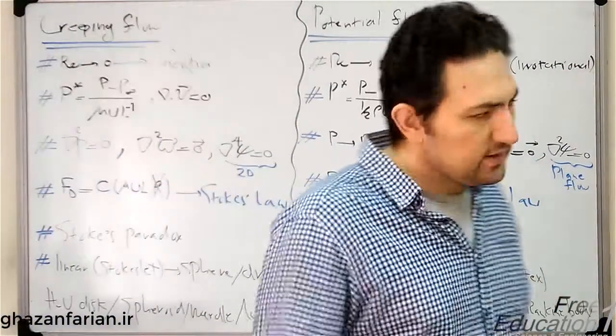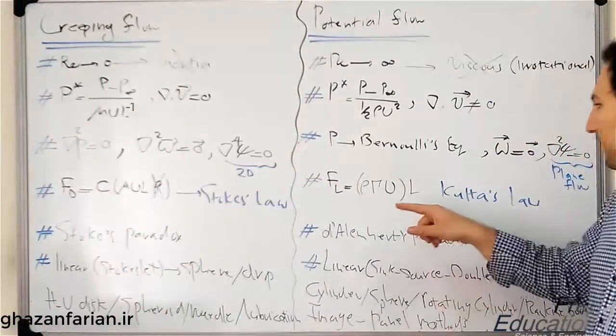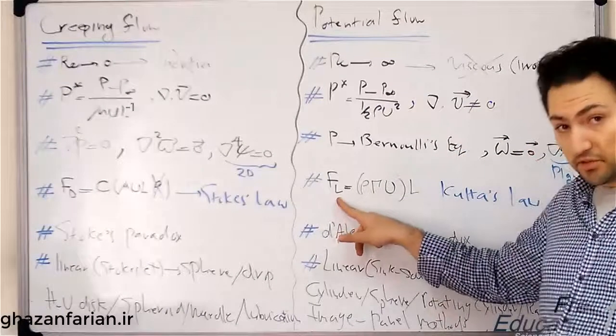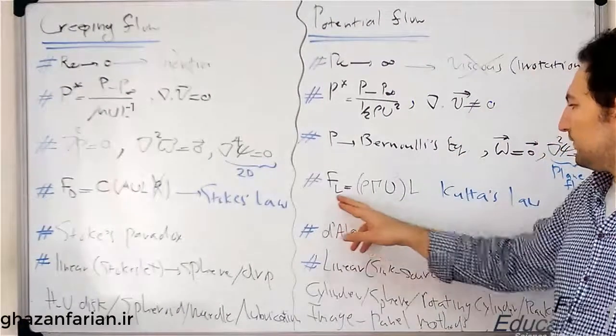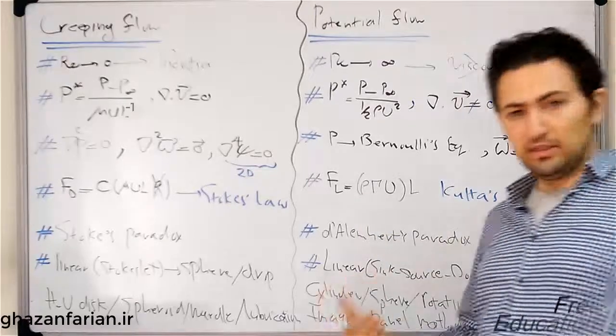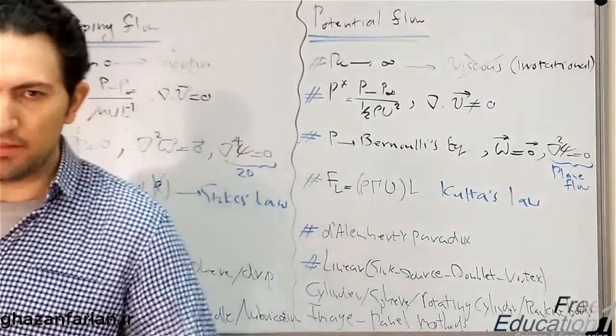But here we have the Kutta's law, this time for the lift force, which says that the lift force is the product of density or circulation, which is needed to generate the flow over that body, and the velocity of incoming flow or the upstream velocity and the length scale of the problem.